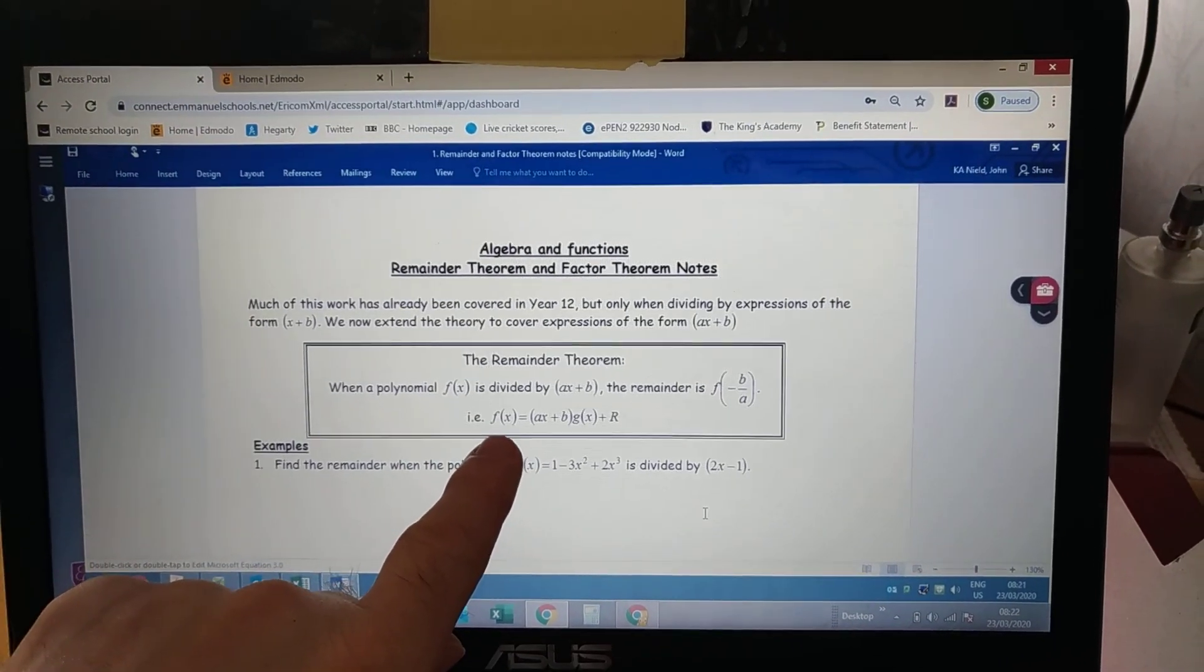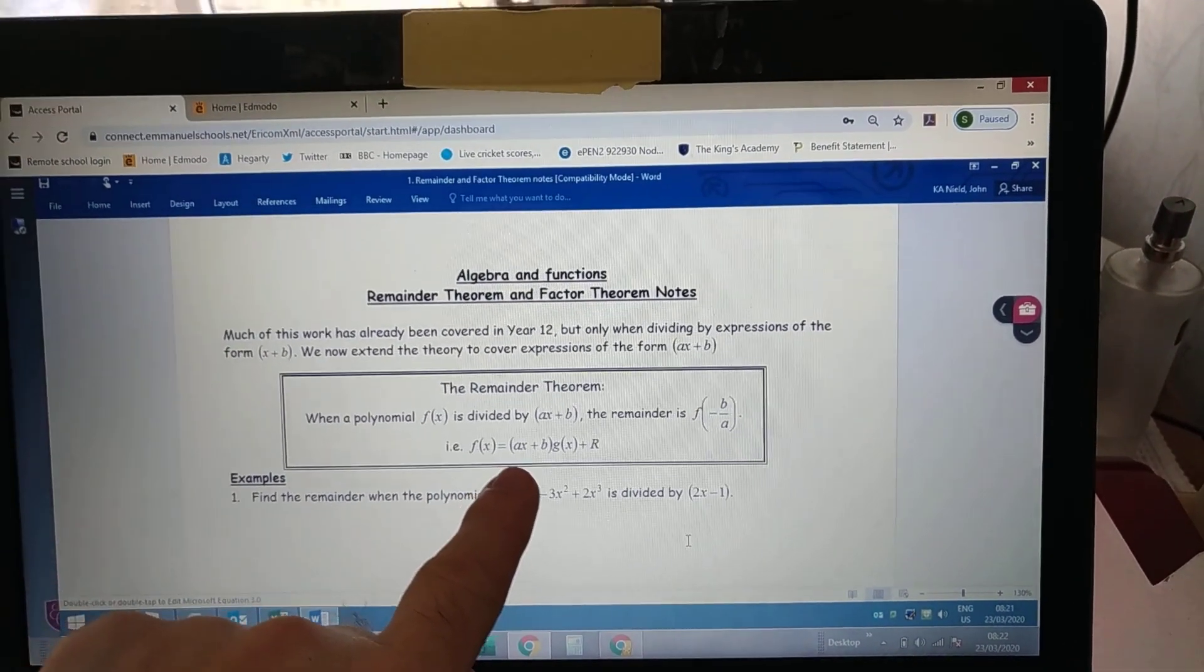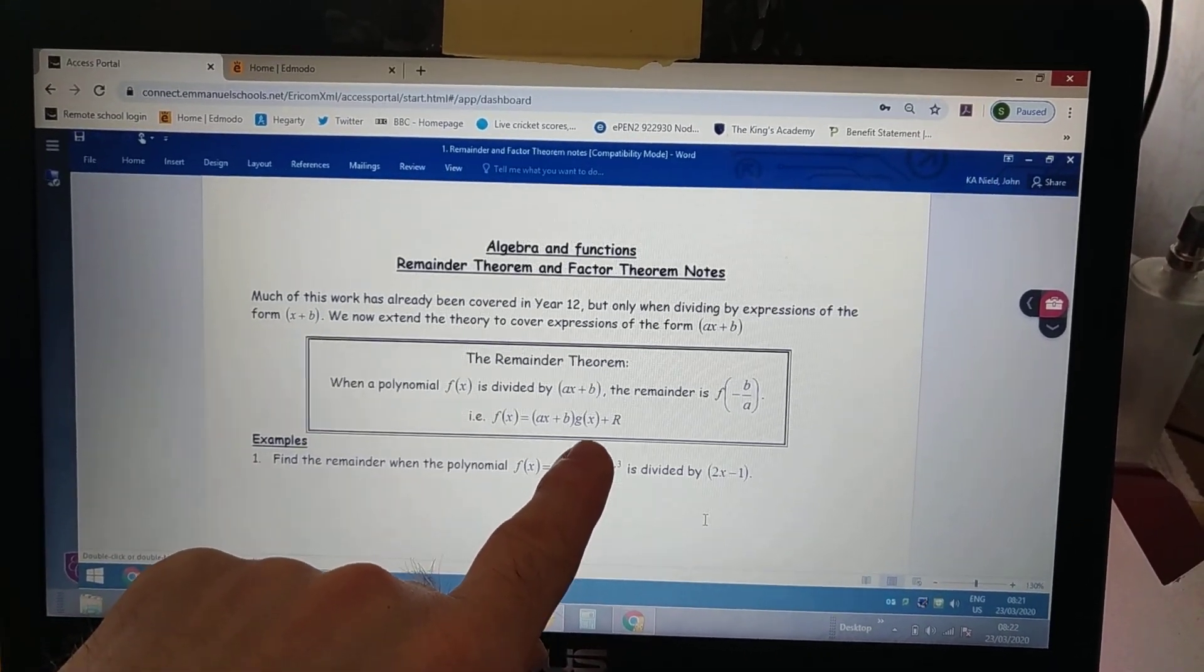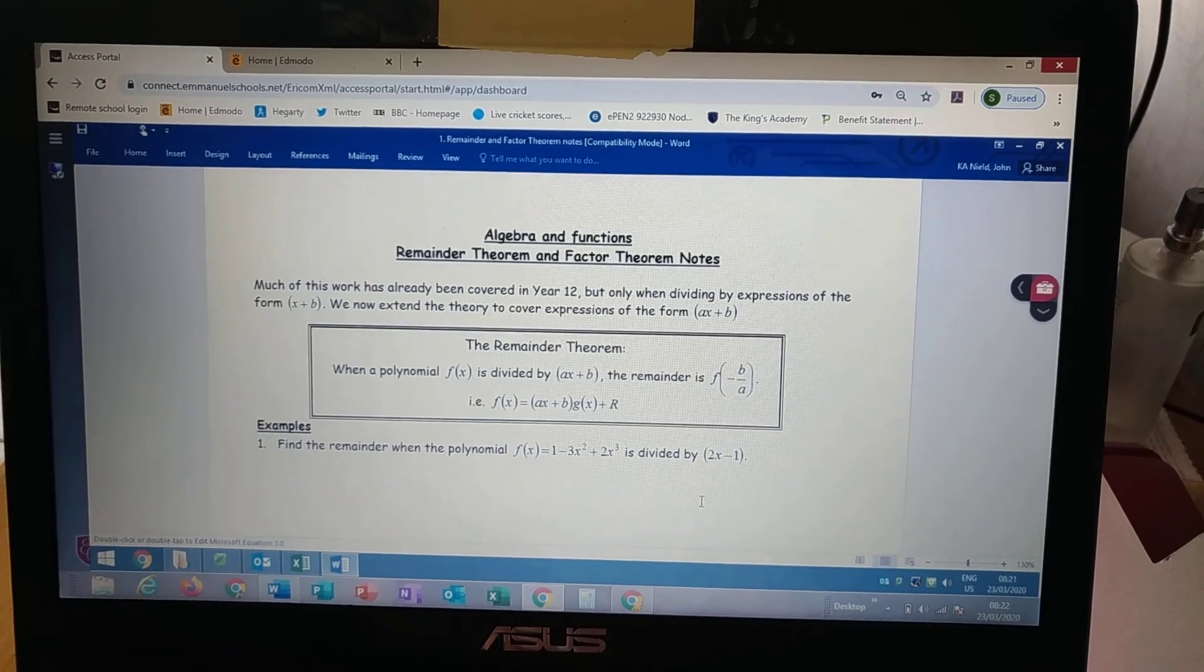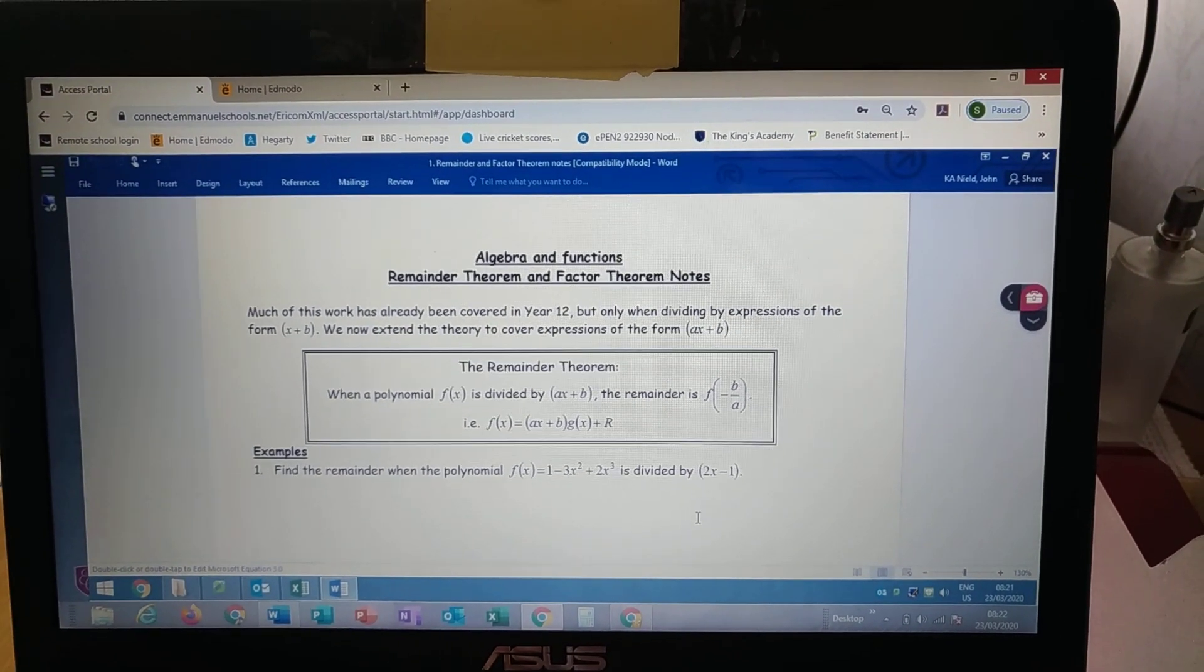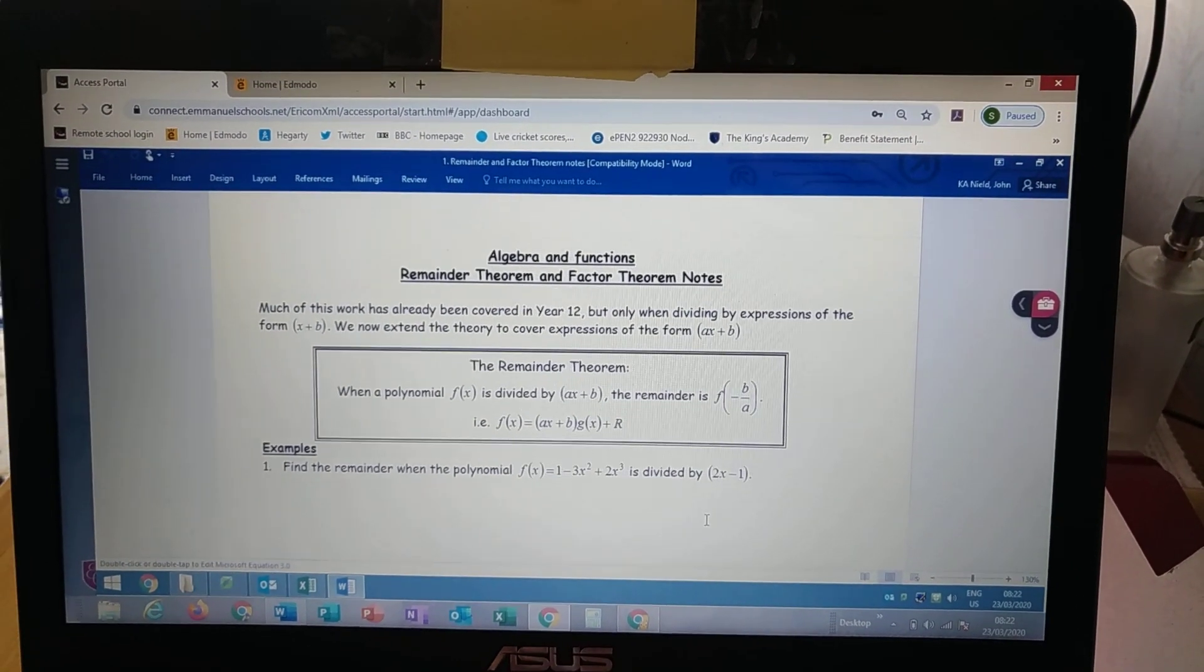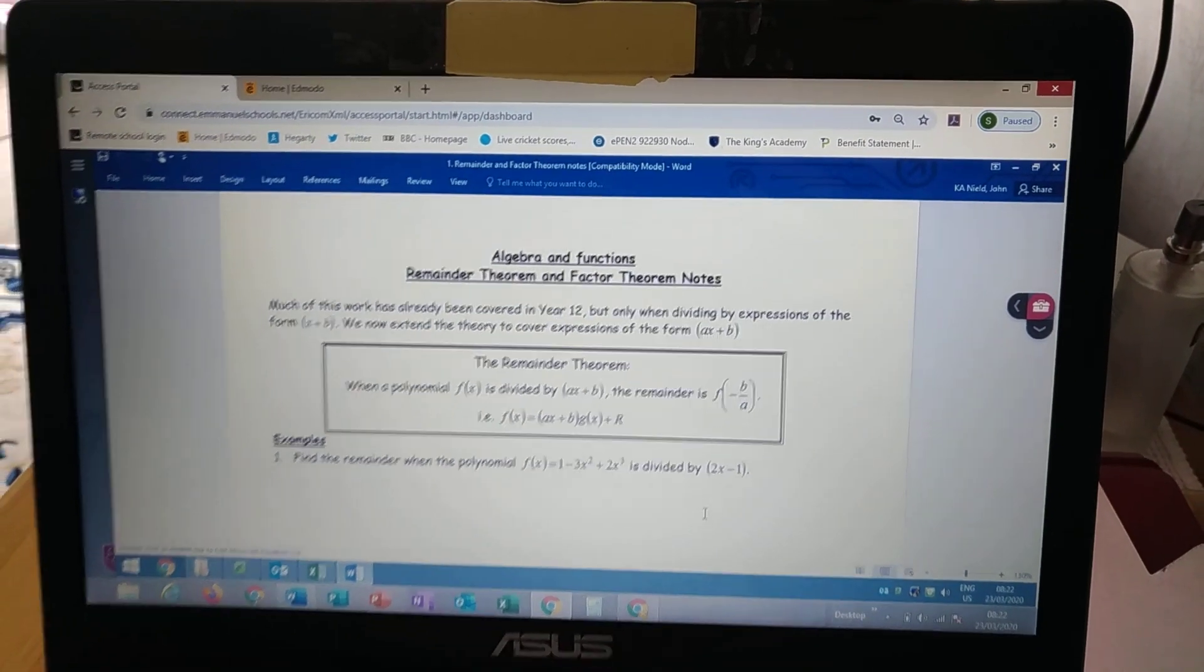It says when a polynomial f(x) is divided by ax plus b, the remainder is f of minus b over a. That's the x value that makes the bracket equal to 0. So the idea is then I can write f(x) equals ax plus b in brackets times a different polynomial, a smaller polynomial, plus our remainder.